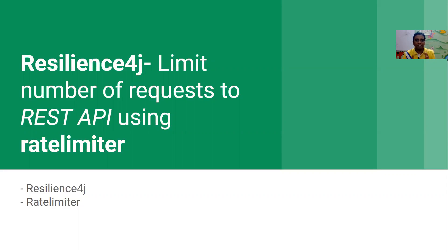In this use case the REST API is going to serve only five requests per one second. If more requests are coming — if requests are more than five — it is going to reject them. This functionality can be easily achieved in the Spring Boot world with the library called Resilience4j. Resilience4j has a module called rate limiter, and we are going to use that module to limit the number of requests served by the REST API.